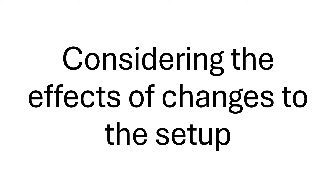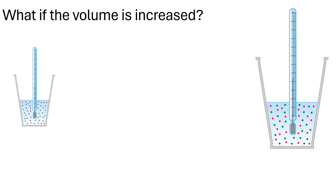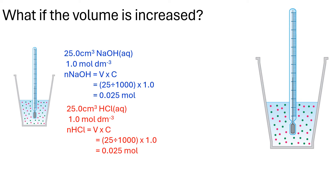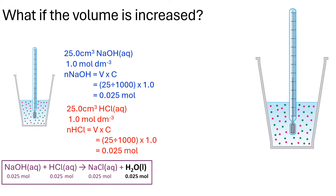Let's consider the effects of changes to this setup. If we increase the volume, on the left hand side we've got a smaller volume — two samples each of 25 cm³, the same concentration of sodium hydroxide and hydrochloric acid. This is a neutralization reaction which makes water and a salt. The neutralization enthalpy, delta nu H, is defined as the enthalpy change when one mole of water is made from a neutralization between an acid and a base.